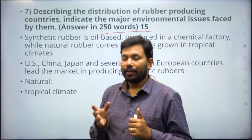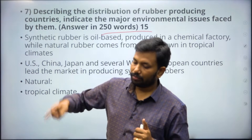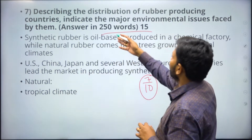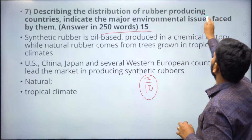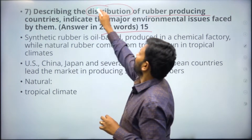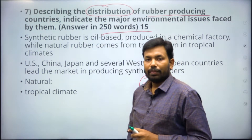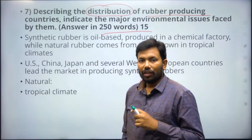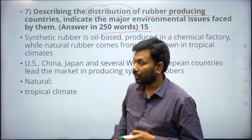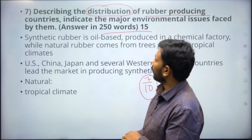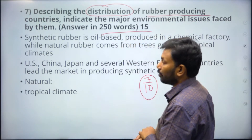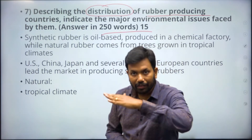Don't beat around the bush. The question asks you to describe the distribution of rubber-producing countries. Focus on distribution only. You might have specialized knowledge in chemistry, biology, or tire factories — that is not needed here. We want just the distribution.